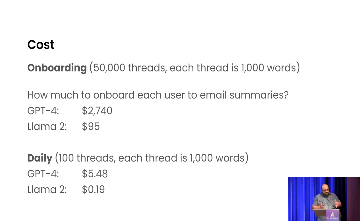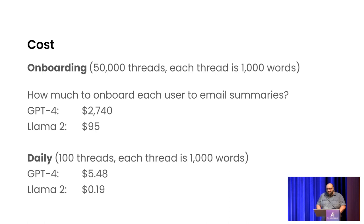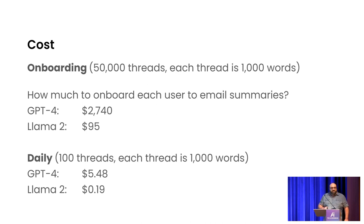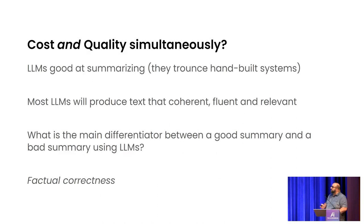Imagine you've finished this email application and it's now time to onboard your company — summarize all the emails that everyone has ever seen. If you use GPT-4, it's going to cost you $2,500 per user. Llama 2 is $95 — maybe we can manage that. If you think about the cost per day, it's roughly $6 a day for GPT-4 and 19 cents for Llama 2. But a legitimate claim is that Llama 2 is not very good. So how can we validate that this cost-saving measure does not adversely impact quality?